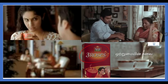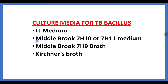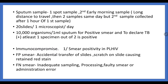To remember the culture media, think of the Brooke Bond Three Roses advertisement with two people preparing from the kitchen. One medium is Middlebrook — 'Brook' is between two people giving broth and medium. Kirchner, prepared from the kitchen, gives Kirchner broth. We know that LJ medium is the gold standard. These are all the culture media for tuberculosis.